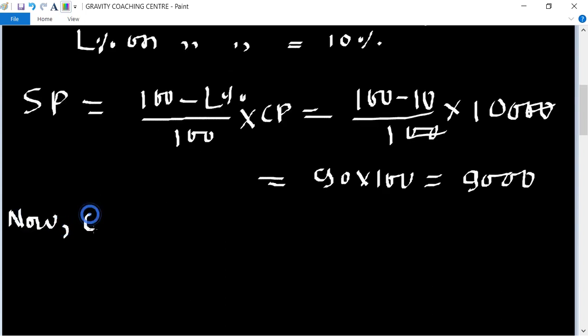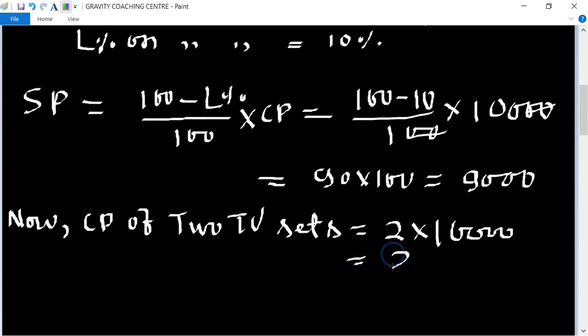Now CP of two TV sets equals, its price of each TV is 10,000, so 2 into 10,000 equals 20,000.